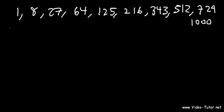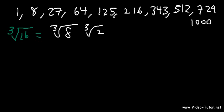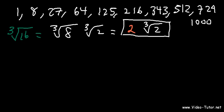Let's say if you want to find the cube root of 16. What is the highest perfect cube that goes into 16? It's 8. 16 divided by 8 is 2. So you want to rewrite the cube root of 16 as the cube root of 8 times the cube root of 2. The cube root of 8 is 2, because 2 to the 3rd power is 8. So this simplifies to 2 cube root of 2.